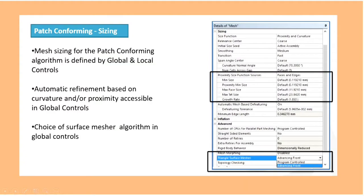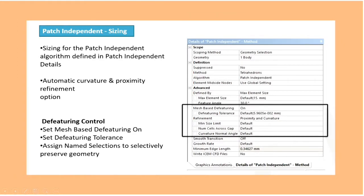Mesh sizing for the Patch Conforming algorithm is defined by global and local controls. Automatic refinement based on curvature proximity is accessible in global controls. Choice of surface mesh algorithm is in global controls. Sizing for the Patch Independent algorithm is defined in Patch Independent details. Automatic curvature and proximity refinement options are available. Defeaturing control is set mesh-based during on. Set defeaturing tolerance. Assign named selections to selectively preserve symmetries.